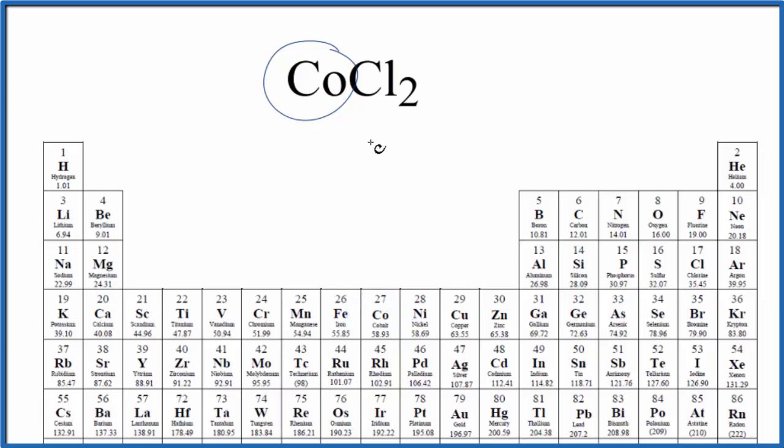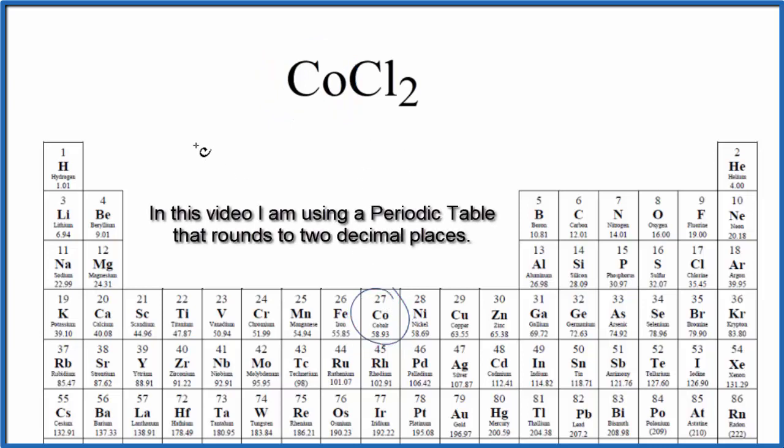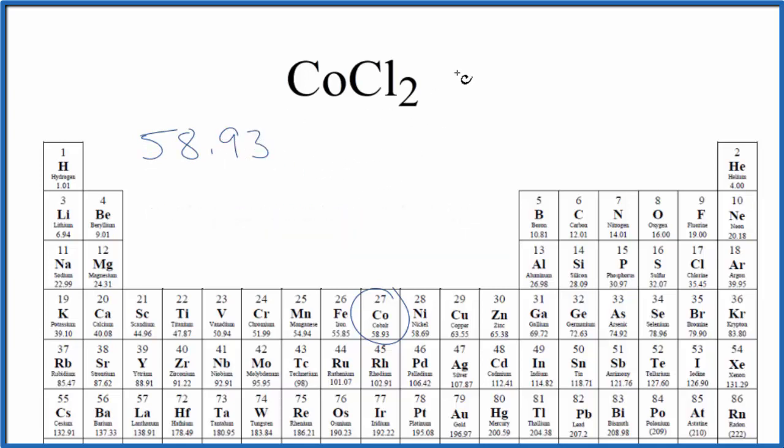So for cobalt on the periodic table, we have a molar mass of 58.93. The units are grams per mole. I won't write that. Let's just write that at the end. We have one cobalt atom. For the chlorine, we have 35.45 grams per mole. We have two chlorine atoms. We'll multiply that by two.